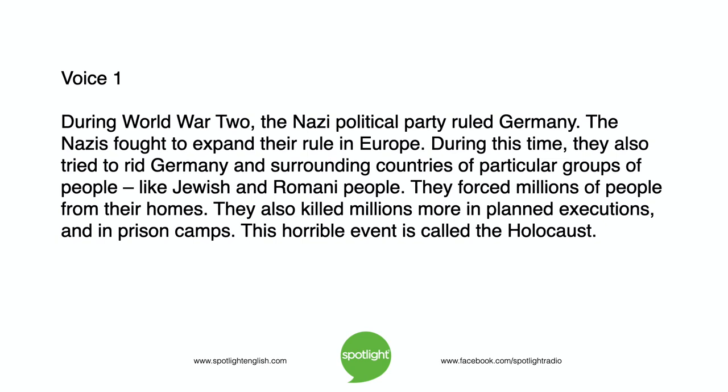During World War II, the Nazi political party ruled Germany. The Nazis fought to expand their rule in Europe. During this time, they also tried to rid Germany and surrounding countries of particular groups of people, like Jewish and Romani people. They forced millions of people from their homes. They also killed millions more in planned executions and in prison camps. This horrible event is called the Holocaust.